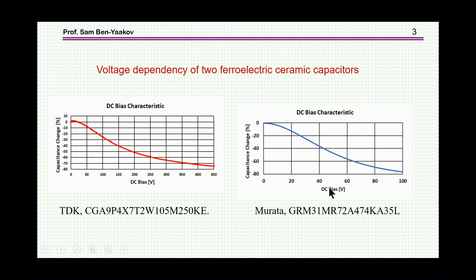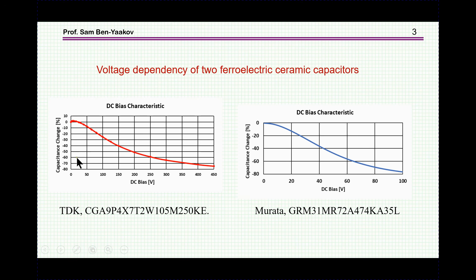The question is: where can we get a capacitor that can be controlled? As it turns out, ferroelectric ceramic capacitors — the so-called Class II and III capacitors — are highly voltage dependent. Usually this is considered a deficiency, because as the bias of the capacitor changes, the capacitance changes dramatically. As shown here for two capacitors from two vendors, the change in capacitance is very large — about 80% — such that the final value at the maximum operating voltage is about 20% of the initial value.